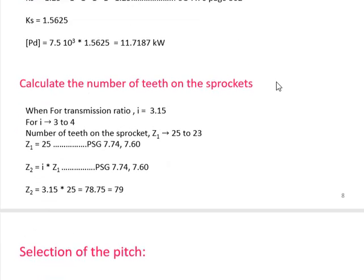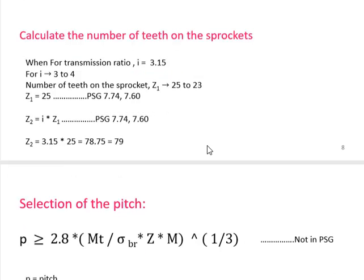Since we know the service factor Ks, we can calculate the design power, which comes to approximately 11.7187 kW. Next, we calculate the number of teeth on the sprockets. From design data book 7.74, for a reduction ratio of 3 to 4, the number of teeth on the sprocket can be 25 to 23. Since our reduction ratio is 3.15, close to 3, Z1 — the number of teeth on the smaller sprocket — is taken as 25.